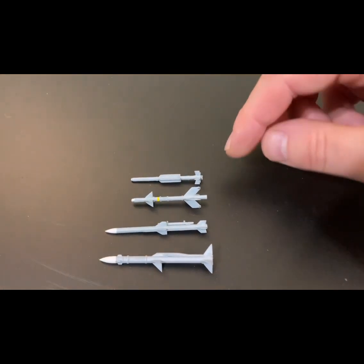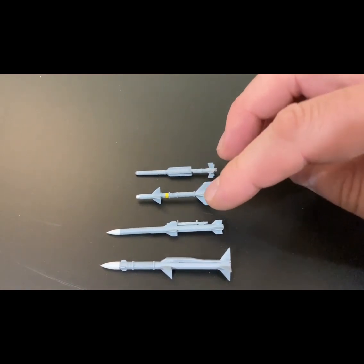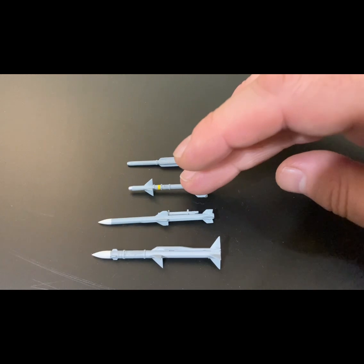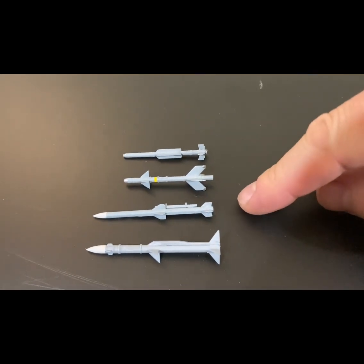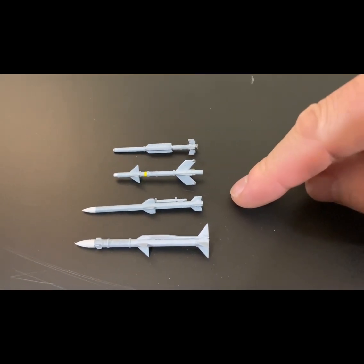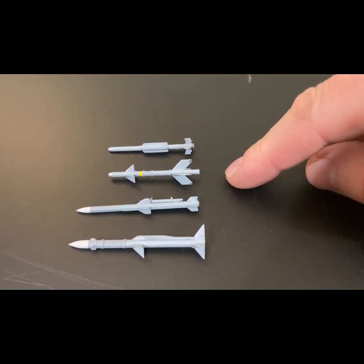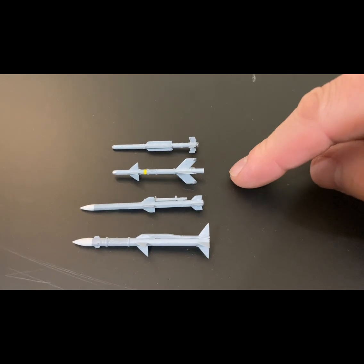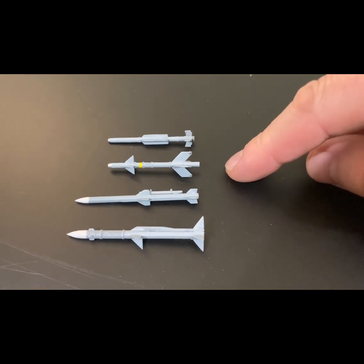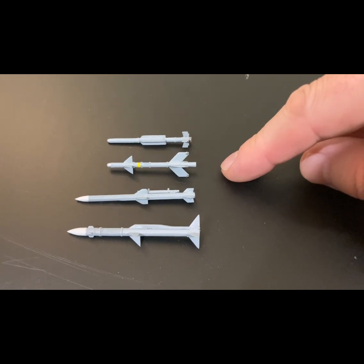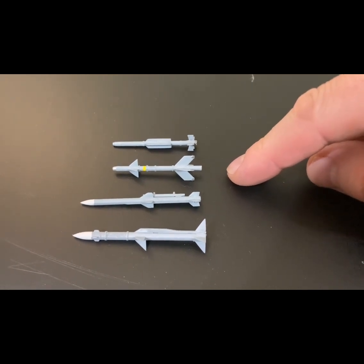So we'll start from the top, and these are the missiles that Madagascar One in 72nd Air Force uses. The first one is the PL-8. The PL-8 is based on the Israeli Python 3, which is one of the most successful missiles in the world ever, scoring 35 plus kills in the early 1980s to 1990s.